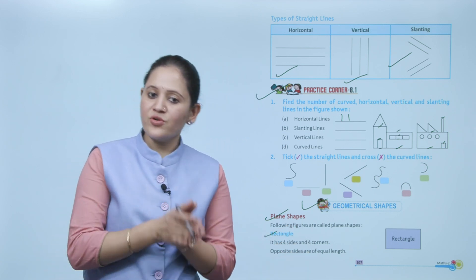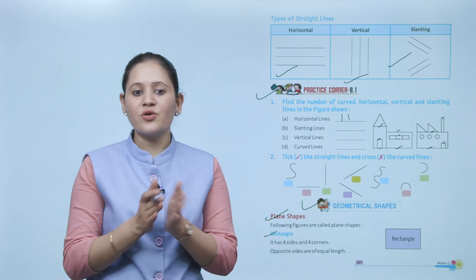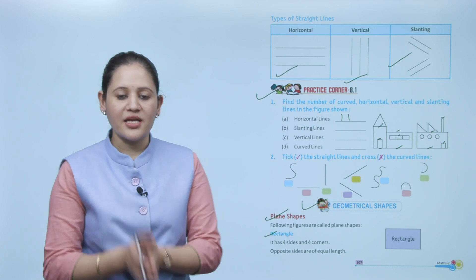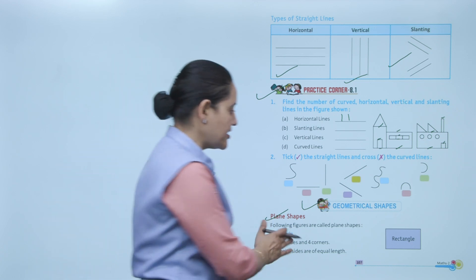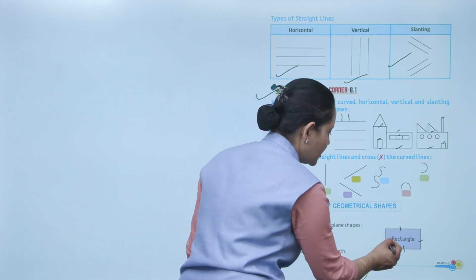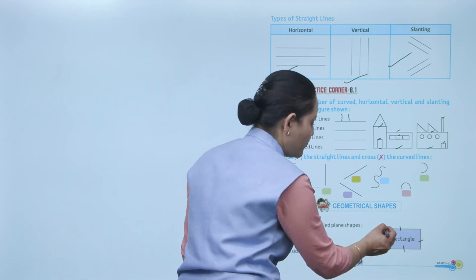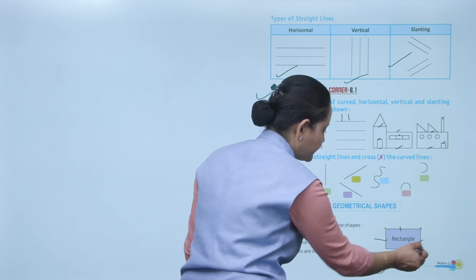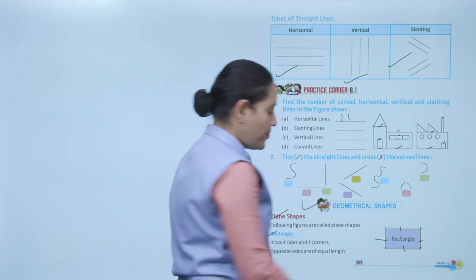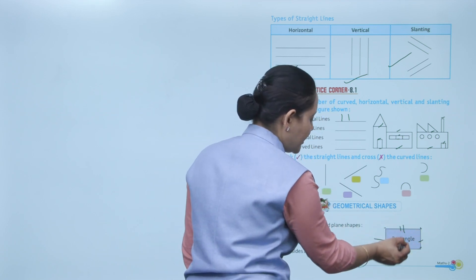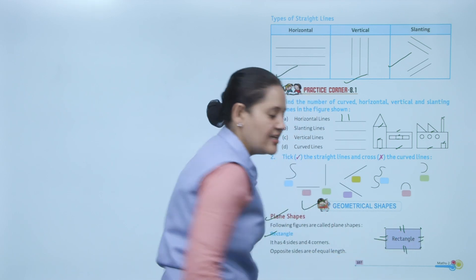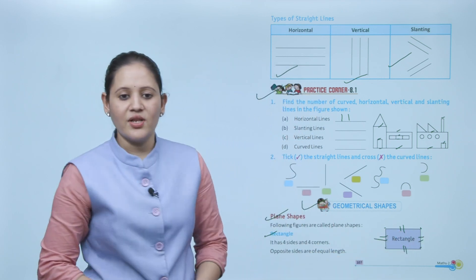A rectangle has four sides and four corners. Opposite sides are equal in length. This is a rectangle — it has four sides: one, two, three, and four, and four corners. In the rectangle, opposite sides are equal — this side and this side are equal, and this side and this side are equal.